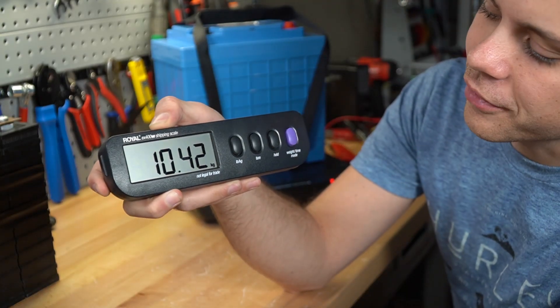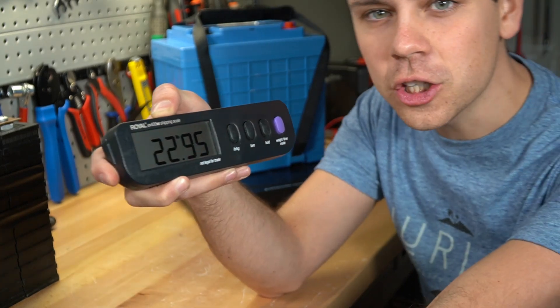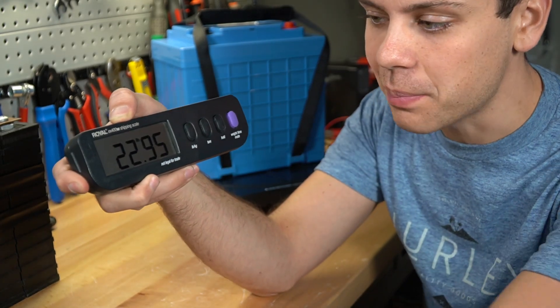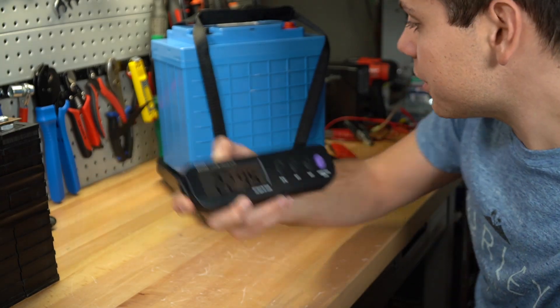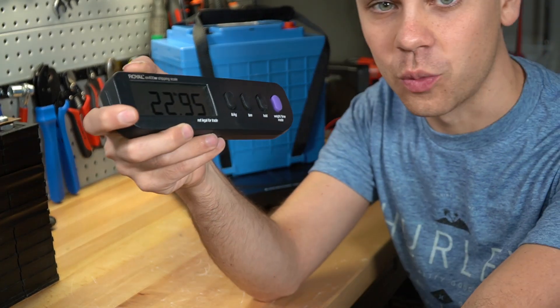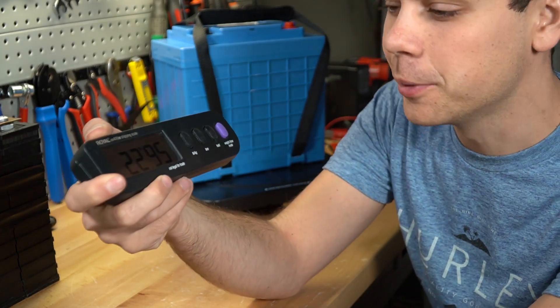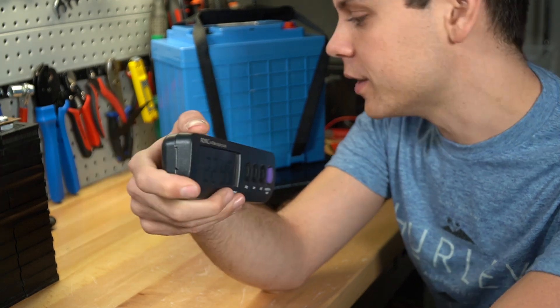This battery is ten point four kilograms or twenty two point nine five pounds. A Battle Born has the same capacity but it's thirty pounds. So this is a very lightweight battery. I'm not sure what they're doing. It might be prismatic aluminum case cells but we're gonna find out in a second.